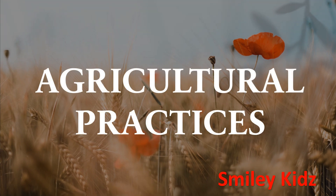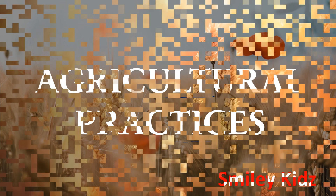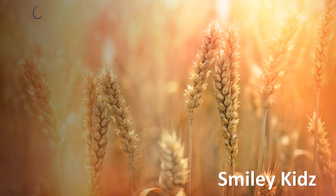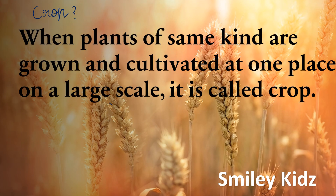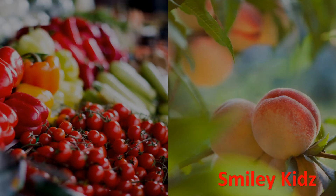Now let's move to the first topic: agricultural practices. What is a crop? When plants of the same kind are grown and cultivated at one place on a large scale, it is called a crop. For example, a crop of wheat means that all the plants grown in the field are wheat. You already know that crops are of different types like vegetables, fruits, and cereals, and there is a rich variety of crops grown in different parts of the country.